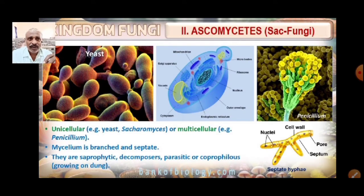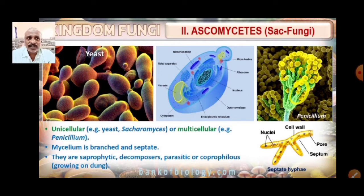After Phycomycetes, the next class is Ascomycetes, also known as sac fungi. These can be unicellular — for example, yeast — or multicellular, such as Penicillium. The mycelium is branched and septate, with cell wall formation present, whether unicellular or multicellular.